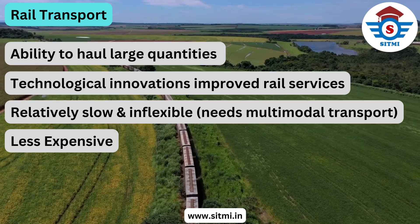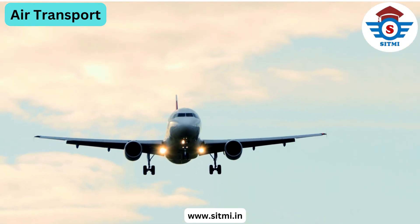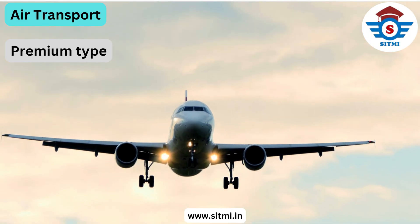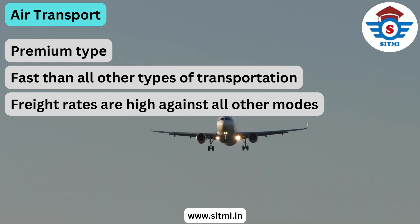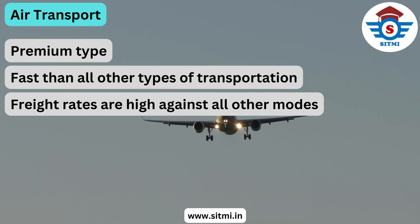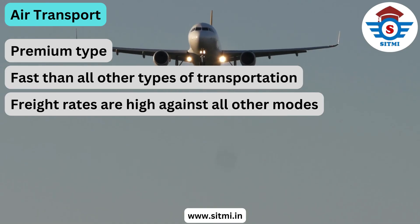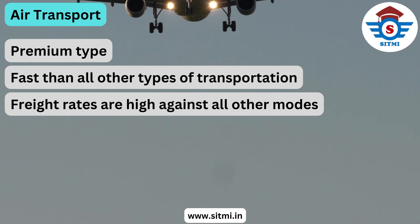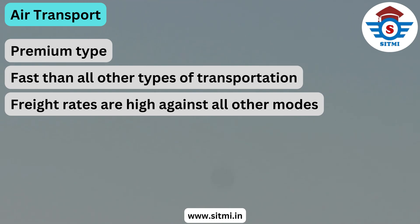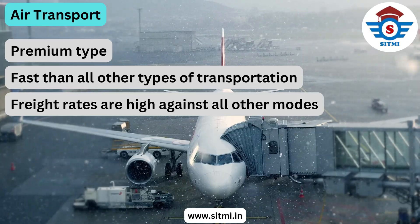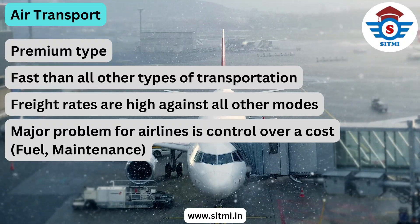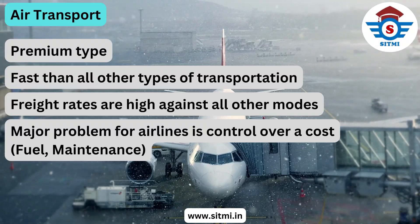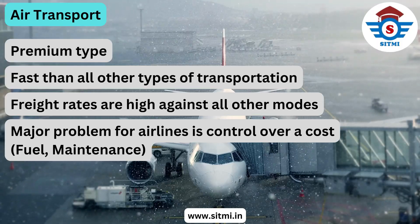The next mode is air transport, which is generally considered a premium means of transportation. Air transportation is fast, but freight rates are correspondingly high. Unless speed is an important factor — such as delivering parts to prevent an assembly line shutdown or meeting a delivery date for a valued customer — a less expensive means of transport is usually preferable. One of the biggest problems faced by airline management is cost control, as fuel prices fluctuate with the price of oil.